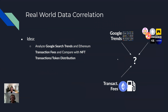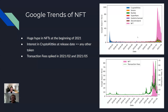Matthias will now continue with some real-world data correlation. Our idea was to look into the Google search trends and the transaction fees from the Ethereum chain and compare them with our NFT data. Looking at the Google search trends, we can see that in February 2021 there was a huge hype, much larger than any hype for individual tokens. For CryptoKitties, there was a peak at the release date in November 2017.